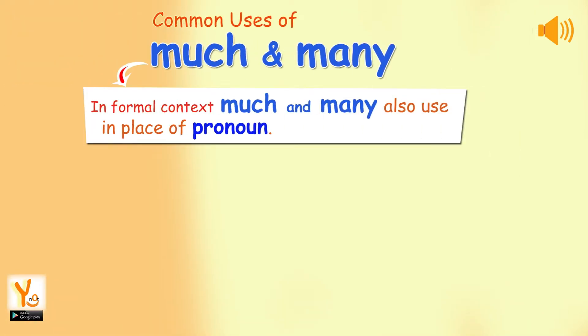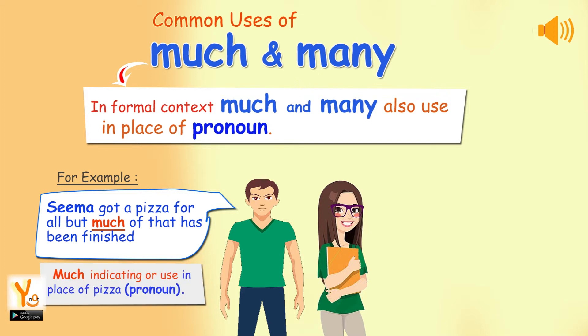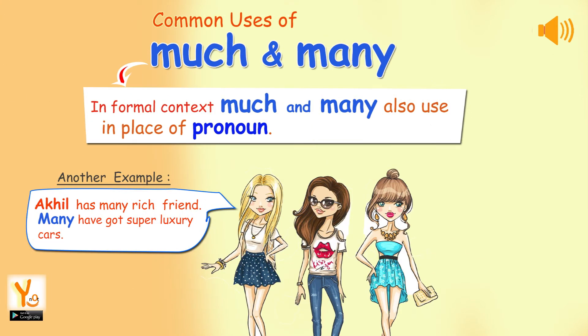In formal context, much and many can also be used in place of a pronoun. For example: Seema got a pizza for all, but much of that has been finished — much is used in place of pizza as a pronoun. Another example: Akil has many rich friends; many have got super luxury cars. Here, many is indicating friends.